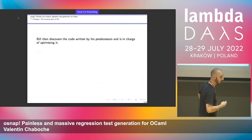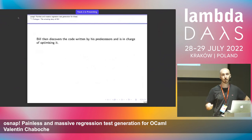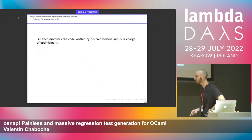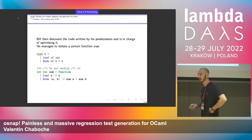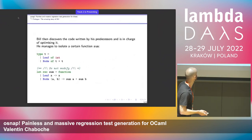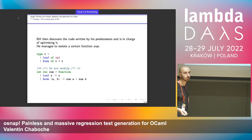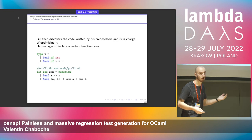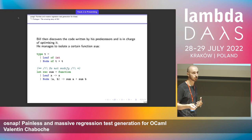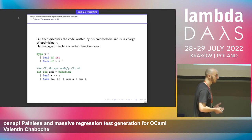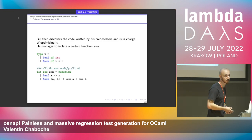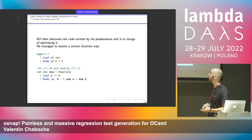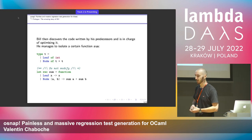For Bill to work, he needs to discover the code written by his predecessor and try to optimize it. He managed to isolate a given function — a sum function of a tree. In OCaml, you can write a tree as an ADT: it's either a leaf of an integer, or a node with sub-trees. There's a function called sum which computes the sum of all the leaves in the tree. It was a pretty naive, recursive implementation.